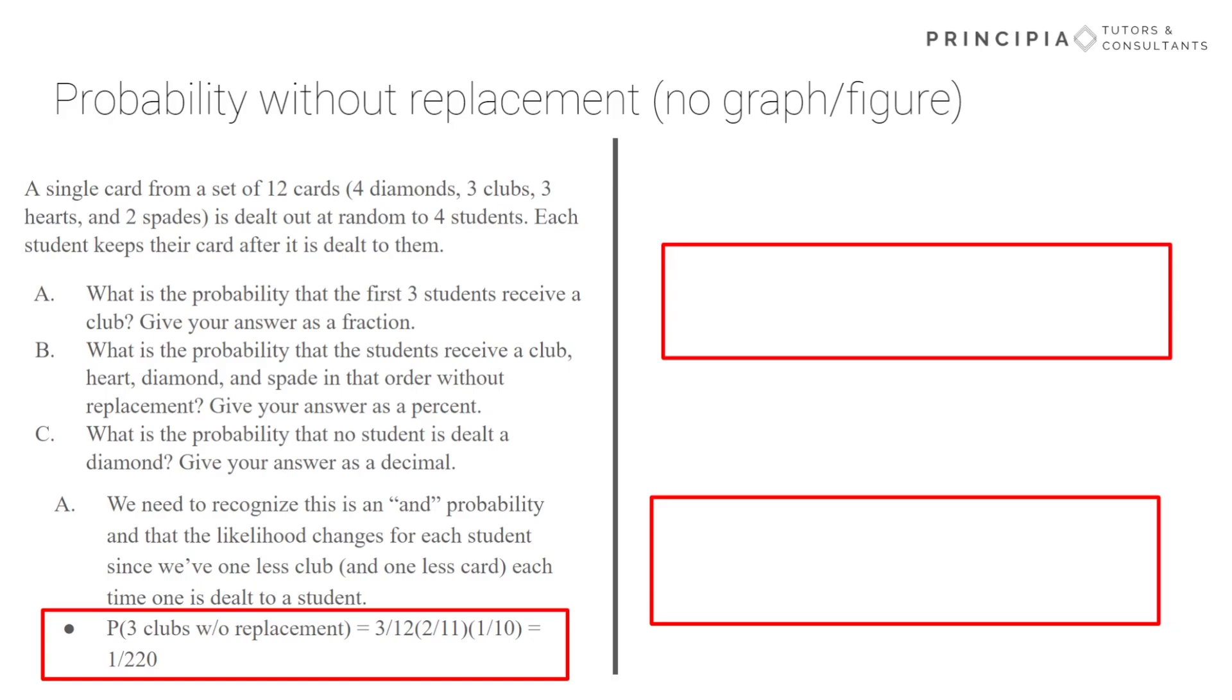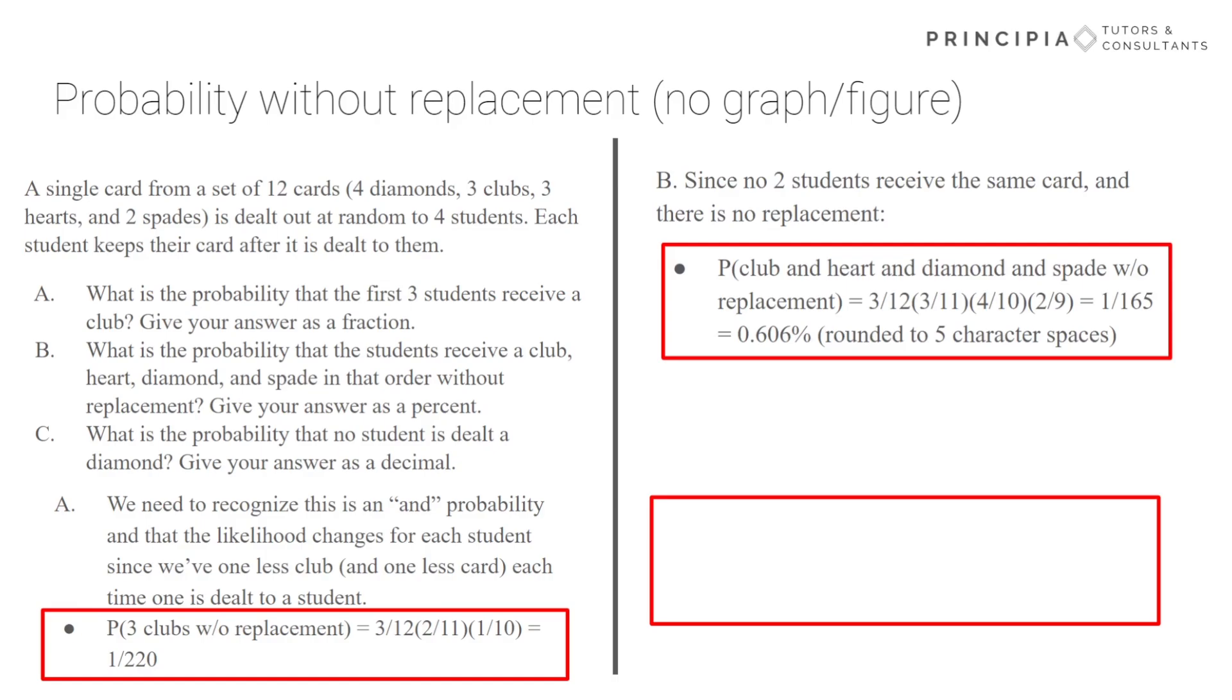So the second question wants our answer as a percent. And now it's saying no student receives the same card as another student. But now without the replacement, the likelihood is going to decrease, the total number of cards will decrease with each draw. And so as we start with the club, three-twelfths, but then the chance of getting a heart is three-elevenths, because now we haven't changed the number of hearts, but the number of total cards has changed. So on and so forth until we end up with one in 165, which is about 0.606% rounded to five character spaces.